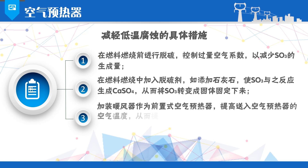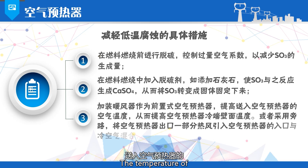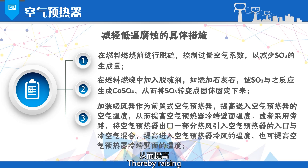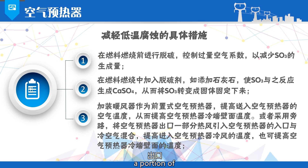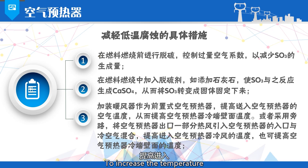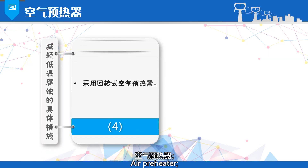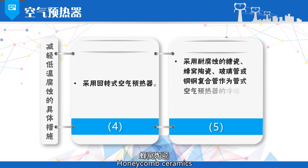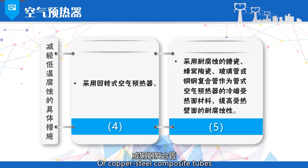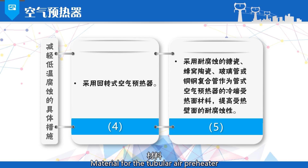Third, install a steam air heater as a pre-type air preheater to increase the temperature of the air entering the air preheater, thereby raising the wall temperature of the cold end of the air preheater. Or use a bypass to divert a portion of the hot air from the outlet of the air preheater to the inlet, mixed with the cold air, to increase the temperature of the cold air entering the air preheater, also raising the wall temperature of the cold end of the air preheater. Fourth, use a rotary air preheater. Fifth, use corrosion-resistant enamel, ceramic, glass tubes, or corrosion-resistant composite tubes as the cold end heat receiving surface material for the tubular air preheater, to enhance the corrosion resistance of the heat receiving surfaces.